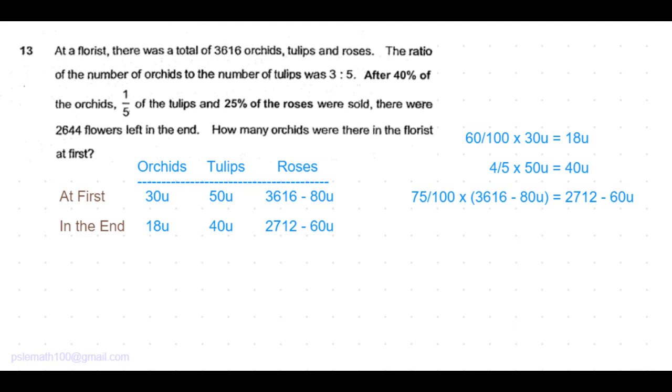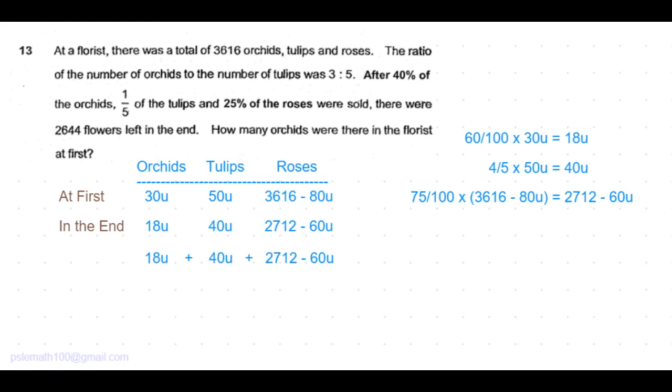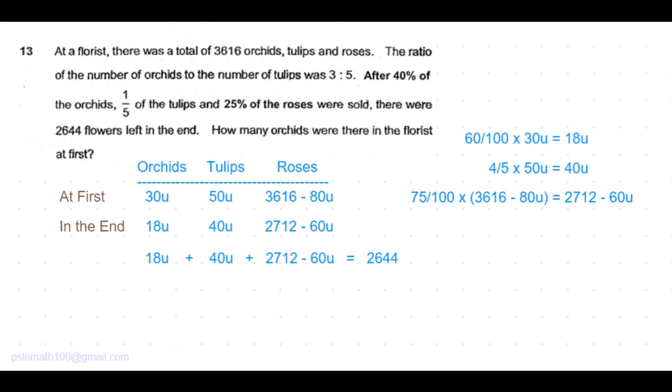But we know in the end, the total number of flowers is 2644. So the total number left is orchids 18 units plus tulips 40 units plus roses 2712 minus 60 units. Now, all together should equal 2644.